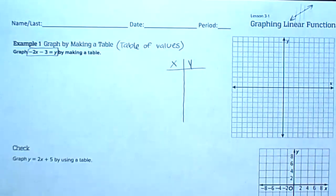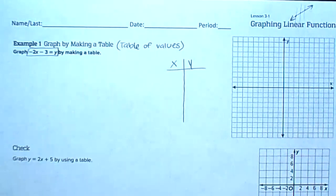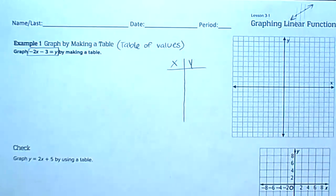The equation we're working with is negative 2x minus 3 equals y. Remember from last module: we don't have any exponents greater than one in x or y. If we had an exponent greater than one, it would be non-linear and curved. None of the equations on your worksheet have variables with exponents greater than one, so these are all linear functions.